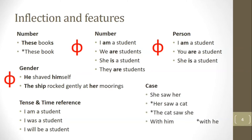Another type of visible inflection is case. In 'she saw her,' both she and her refer to feminine entities, but because of their position in the sentence they appear in different forms: she is nominative, her is accusative. In English it is more accurate to refer to nominative versus non-nominative. 'Her saw a cat' is ungrammatical because a non-nominative marker appears in a nominative position, and 'the cat saw she' is ungrammatical because she is nominative where a non-nominative is expected.